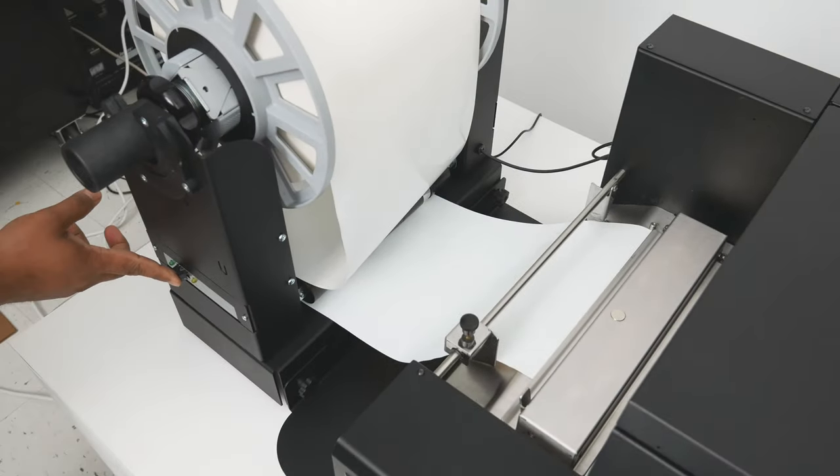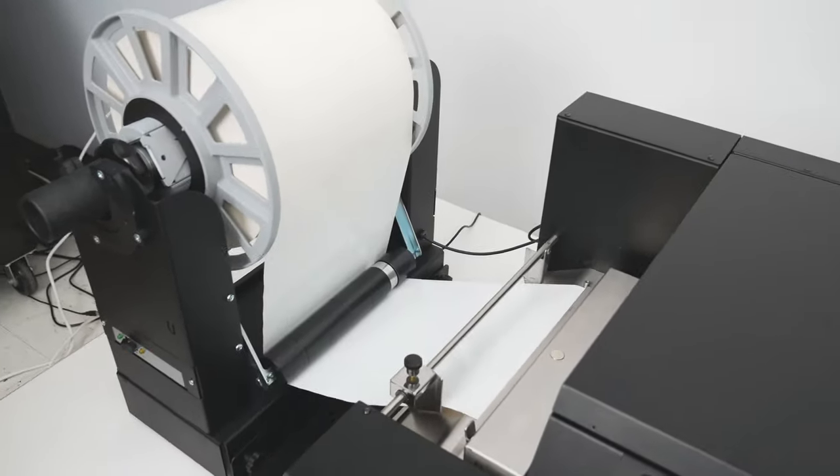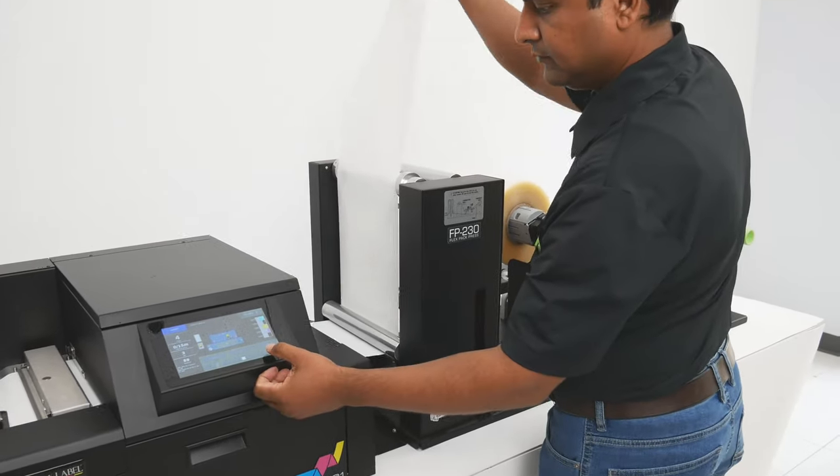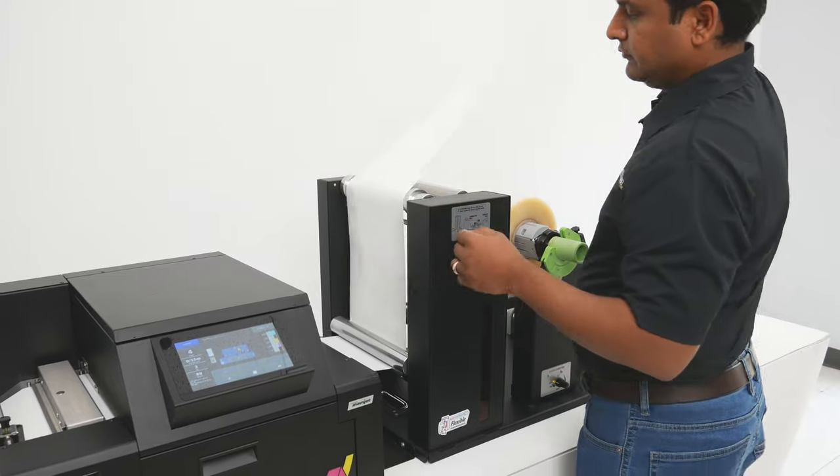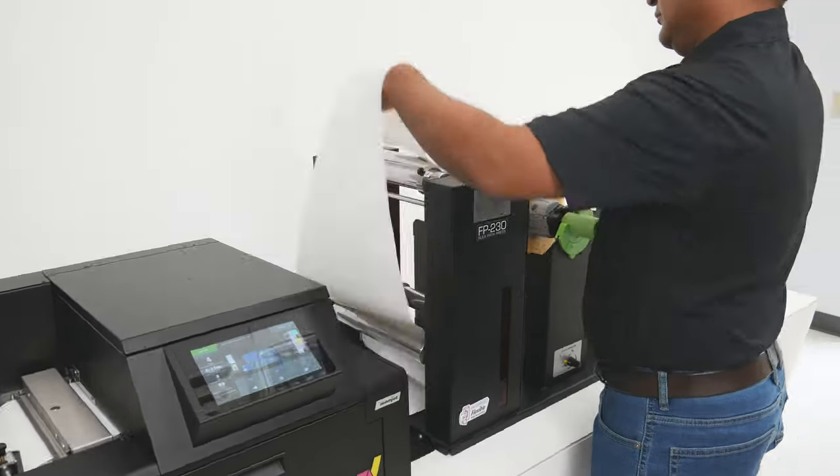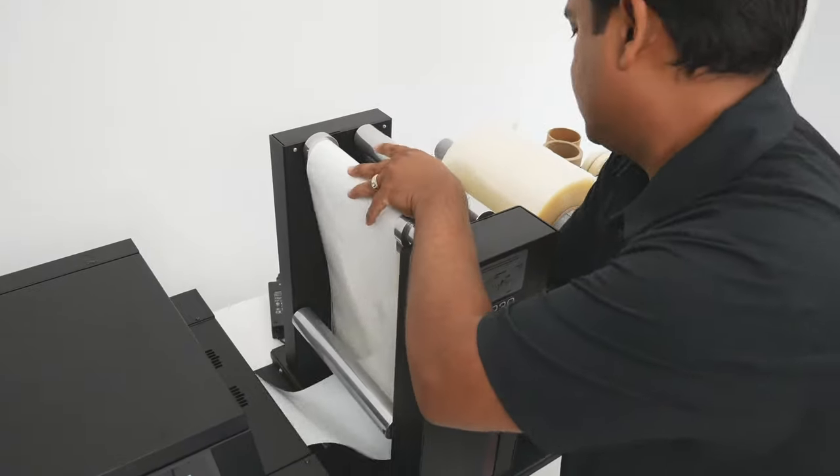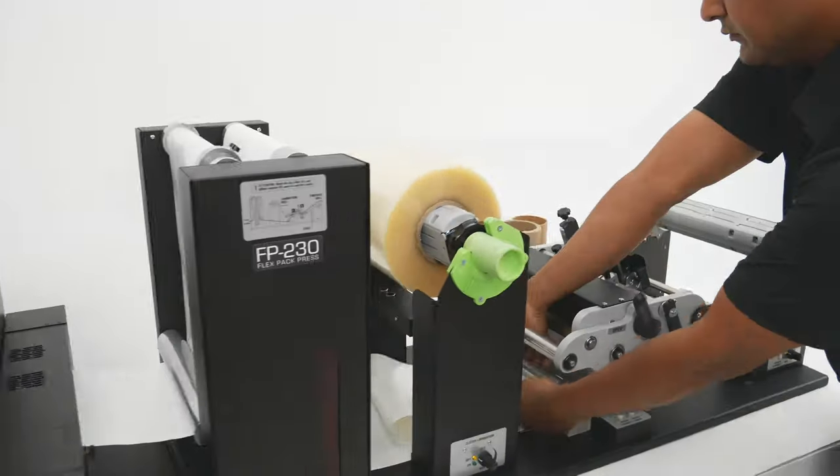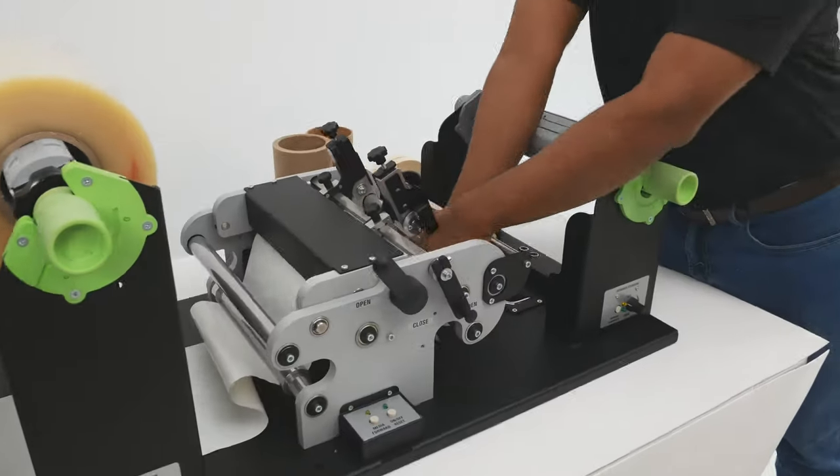The unwinder can be switched on and we'll proceed to feeding the opposite side. We're going to thread the machine through the printer according to the diagram shown here. Advancing the media is easily done with a couple of taps on the touch screen. We'll send out a few feet of material at a time and weave it through to reach the rewinder mandrel.